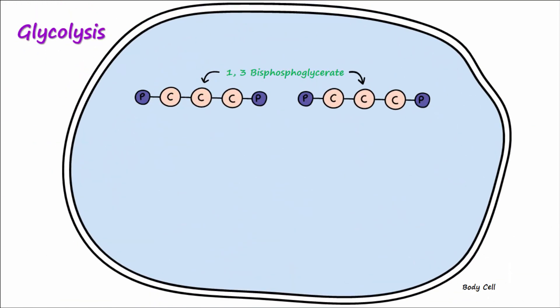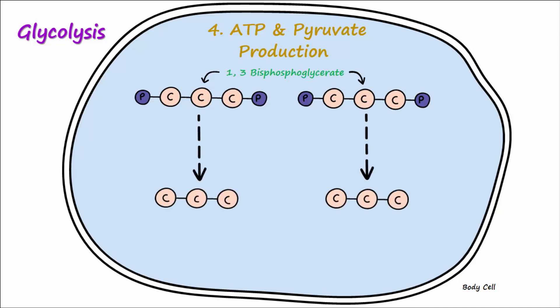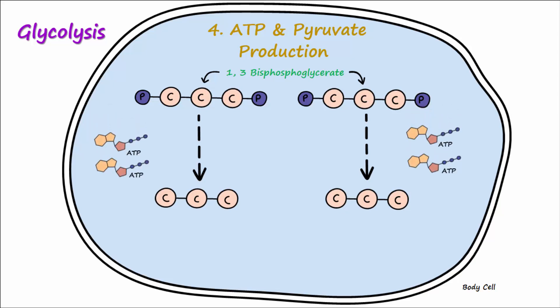In the fourth and final step of glycolysis, ATP and pyruvate production, the two phosphates from each 1,3-bisphosphoglycerate molecule are removed and donated onto ADP molecules, which turn back into ATP. This step also yields two 3-carbon pyruvate molecules.